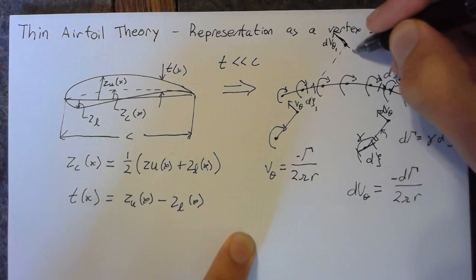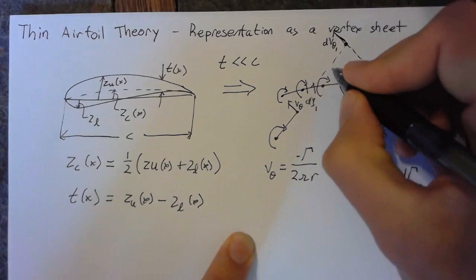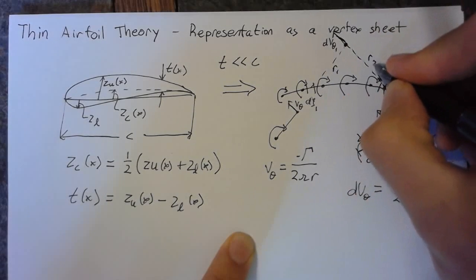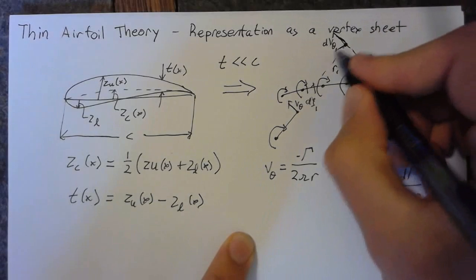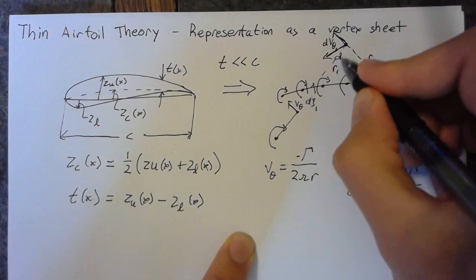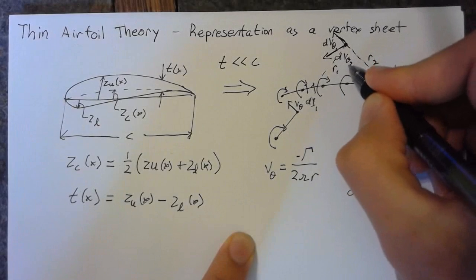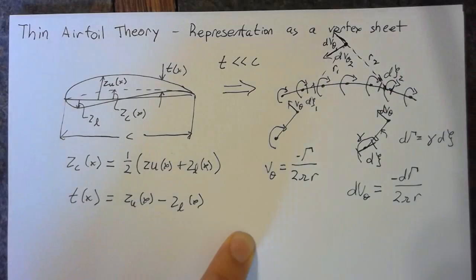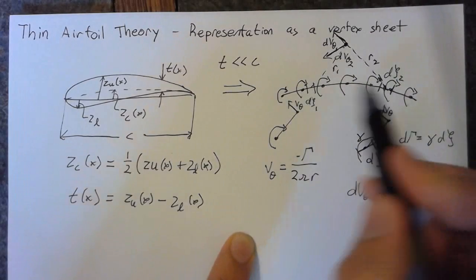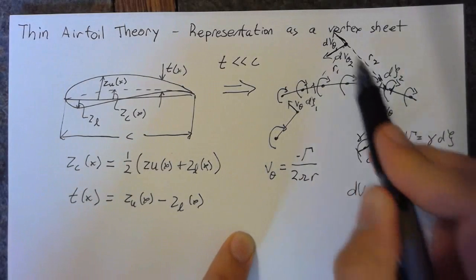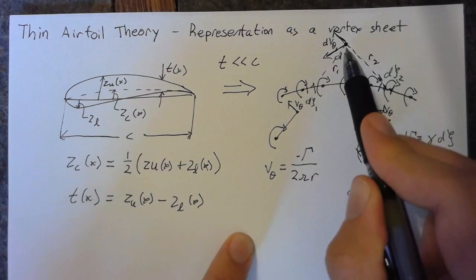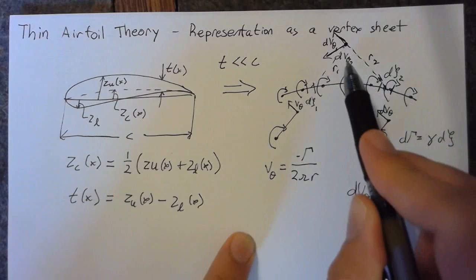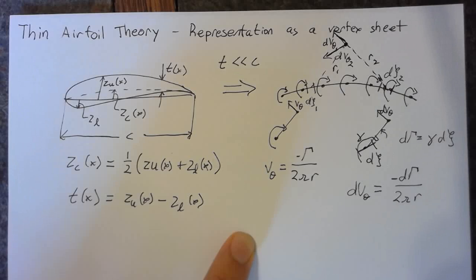So this is our r1, this is our r2, and in this case it's going to cause a d v theta 2 in this direction. So as we move along in our airfoil, the position changes relative to the point we're interested in calculating, and so each of these causes a slightly different direction of the velocity.